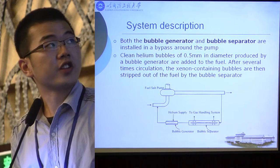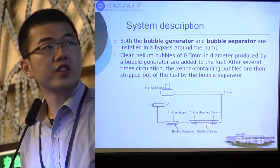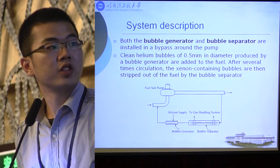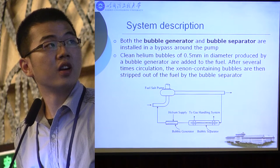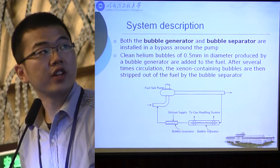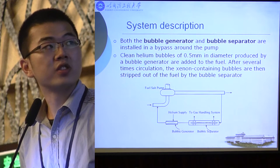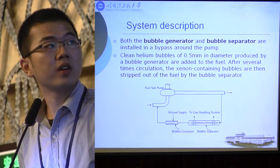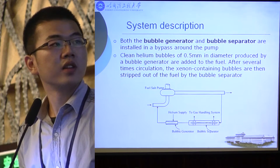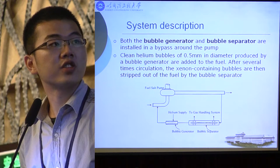First, clean helium bubbles of 0.5 millimeter in diameter produced by the bubble generator are added to the fuel. After several circulation cycles, the xenon-containing bubbles are then stripped out of the fuel by the bubble separator and sent to the gas handling system.